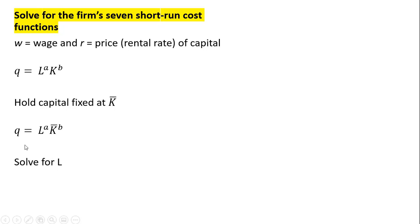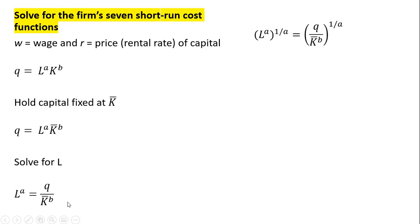The next step is we want to solve the production function for L, labor. So we're going to divide both sides through by K bar raised to the power of B. Then we want to get L by itself, so we raise both sides of the equation by 1 divided by A. On the left-hand side, A multiplied by 1 divided by A cancels and leaves us with L. On the right-hand side, we get Q raised to 1 divided by A, and K bar raised to B divided by A.